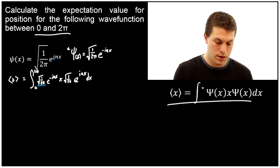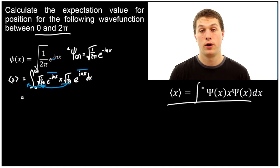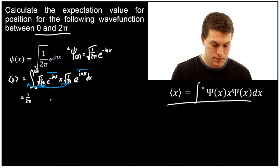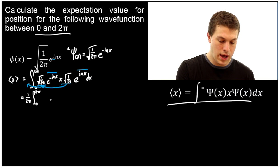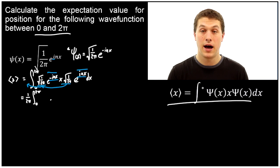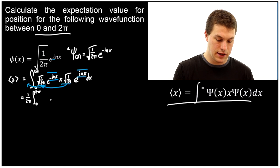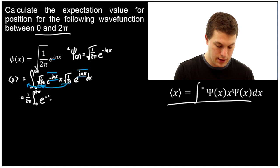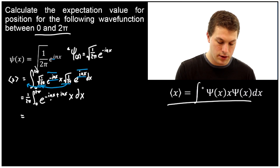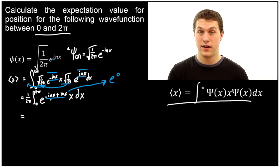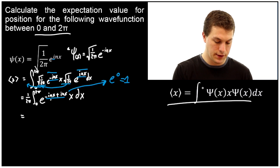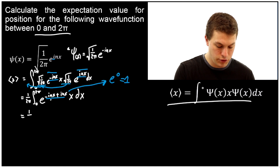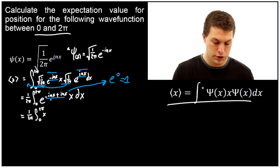Let's simplify. First we pull out the constants and combine the exponentials. Pulling out the constants gives us square root of 1 over 2π times square root of 1 over 2π, which is just 1 over 2π. When we multiply e to the negative in x by e to the positive in x, we add the exponents, giving e to the negative in x plus in x. Adding negative in x and positive in x gives e to the 0, which equals 1 — that's what makes this integral easy. So we still have 1 over 2π, the integral from 0 to 2π, and our x multiplied by 1.